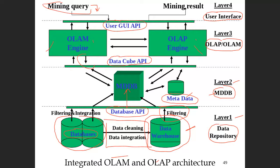By applying OLAP and OLM together, we get the mining results — knowledge discovery of hidden patterns. Something previously hidden can now be found. We can also repeat the results. This is the integrated OLAM and OLAP architecture.